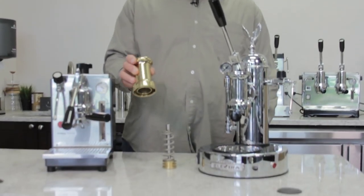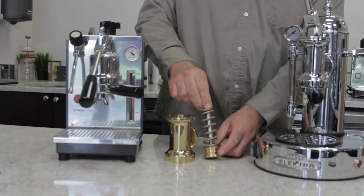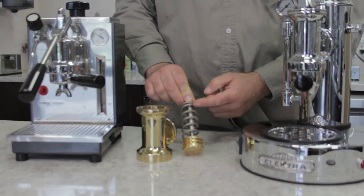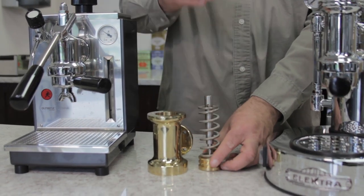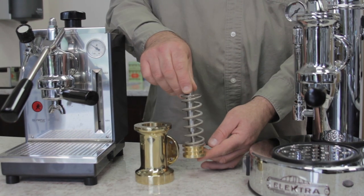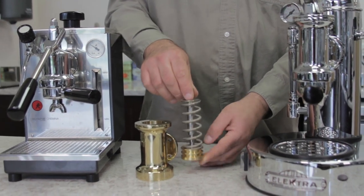So you have your group head, and this is actually from the Electra machine, which is nice and heavy. You have your piston, a stem, and then you have your spring, that basically supplies the force, pushing the piston down, pushing the water through the coffee grinds, to make your espresso.